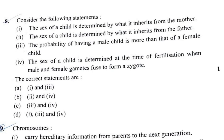Question 8: Statements are given about sex determination. The statement that the probability of having a male child is more than that of a female child is wrong — it's 50-50. The fourth statement, that the sex of a child is determined at the time of fertilization when male and female gametes fuse to form a zygote, is correct. So option B (second and fourth) is the answer.